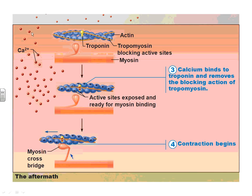The calcium now inside the cell will interact with our thin filament. Calcium binds troponin, and that causes the tropomyosin to switch conformations and move out of the way. Now our myosin head can reach up and grab the actin. In the first image, tropomyosin is in the way, but when the calcium — the little red balls — binds the troponin, it moves tropomyosin out of the way and the myosin head can bind to the actin, and we get movement.